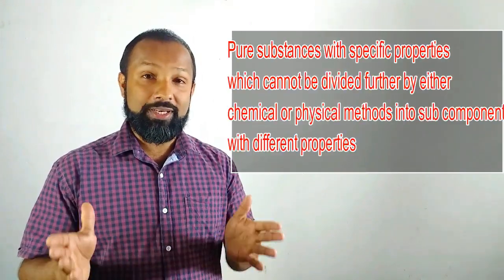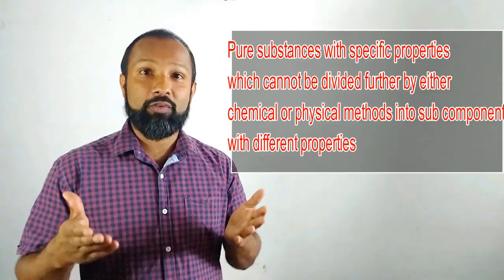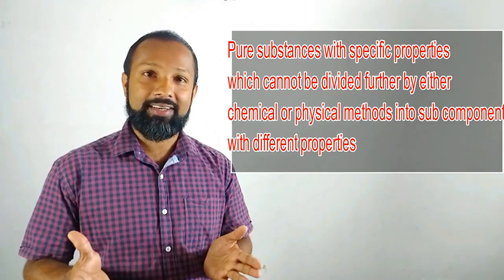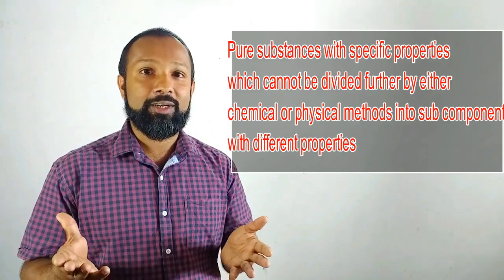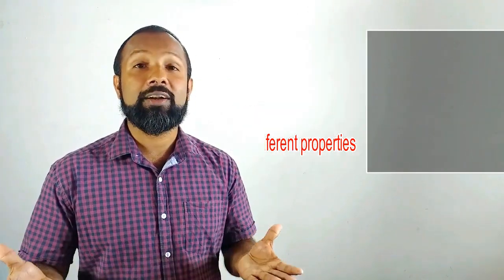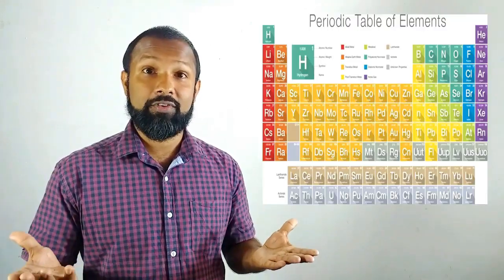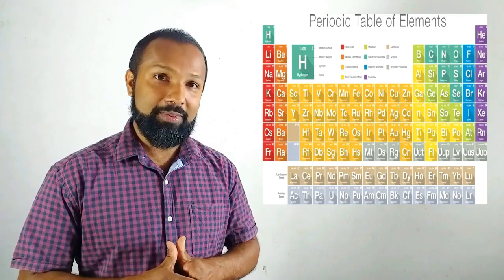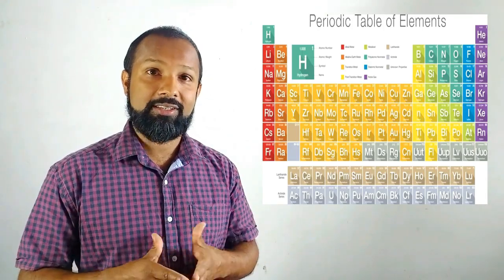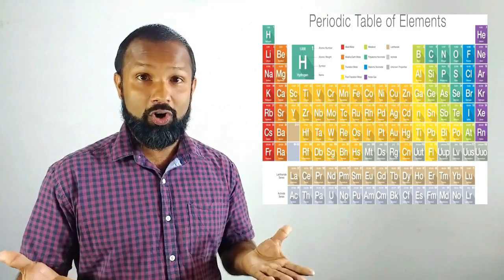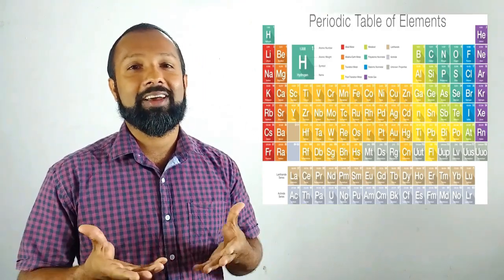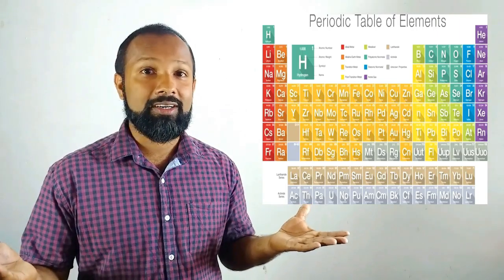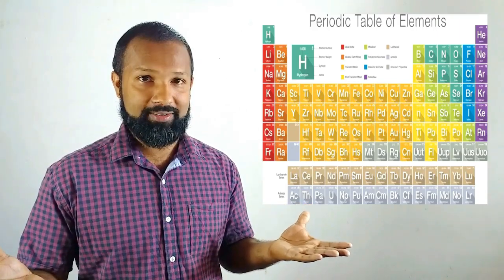Elements are pure substances with specific properties which cannot be divided further by either chemical or physical methods into sub-components with different properties. There are more than 115 elements in our world. Examples include carbon, nitrogen, oxygen, sulfur, chlorine, gold, copper, and aluminium — many of which you have observed in your laboratory.